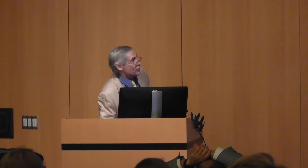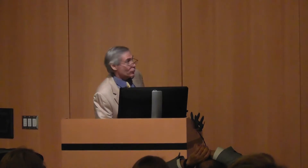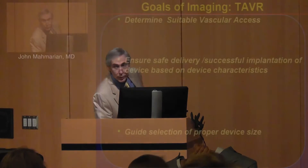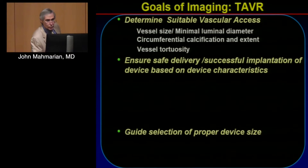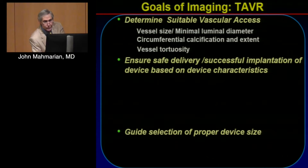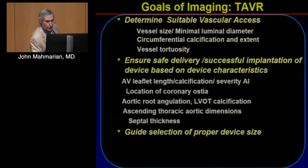I'm going to be talking about CT and where it fits in our assessment of patients going for TAVR procedures. Some of the important issues that we want to address when doing TAVRs are determining suitable vascular access — we want to know vessel size, minimal luminal diameter, circumferential calcification and extent, and vessel tortuosity.